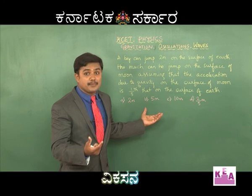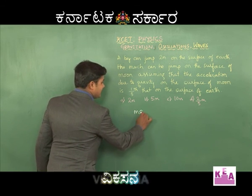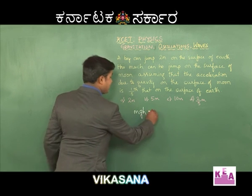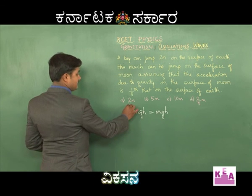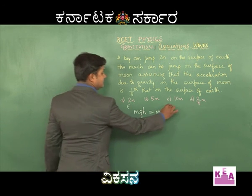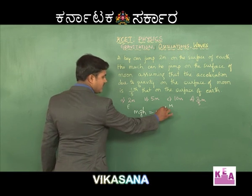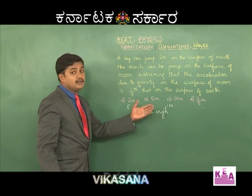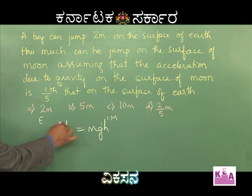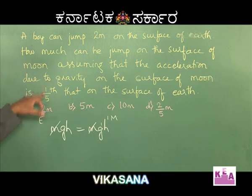I'll take the expression for potential energy. Writing MGH as potential energy, it should be the same for the two surfaces — this one for earth and this for moon. Taking the acceleration due to gravity as G-dash and height as H-dash for the moon, mass M remains the same on both surfaces, and G-dash is given to be one-fifth of G.